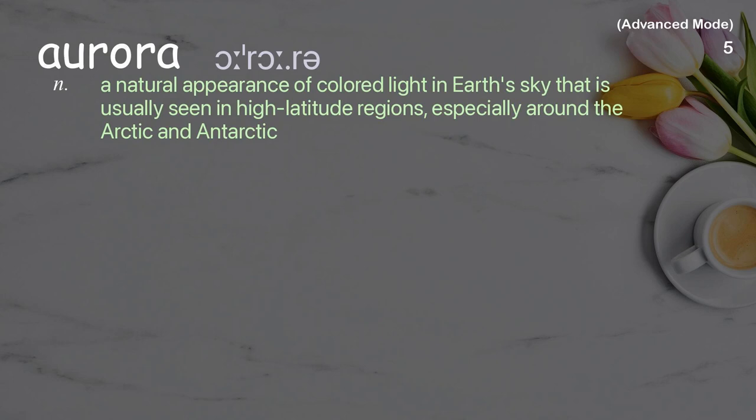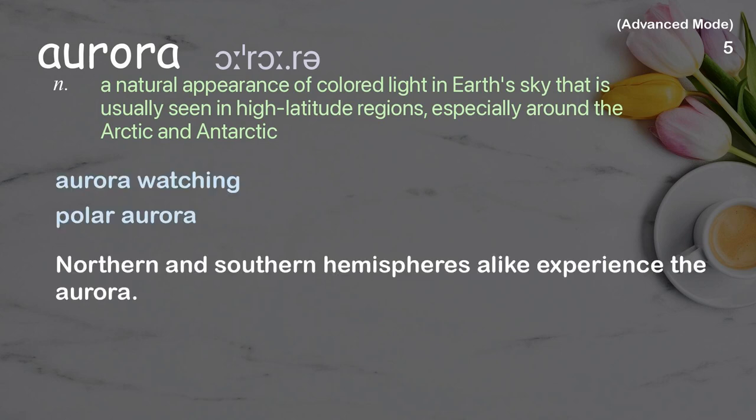Aurora: a natural appearance of colored light in Earth's sky, usually seen in high latitude regions, especially around the Arctic and Antarctic. Examples: aurora watching, polar aurora. Northern and southern hemispheres alike experience the aurora.